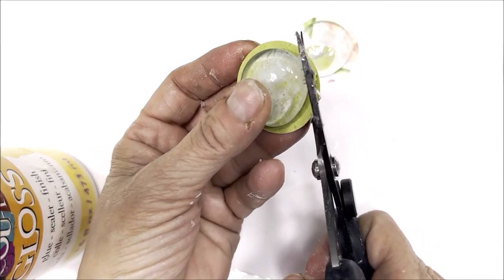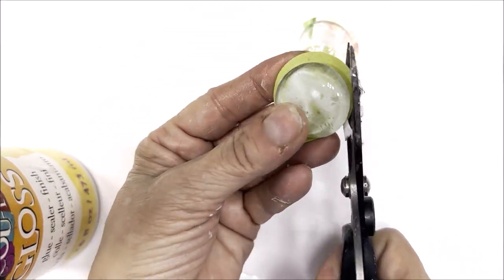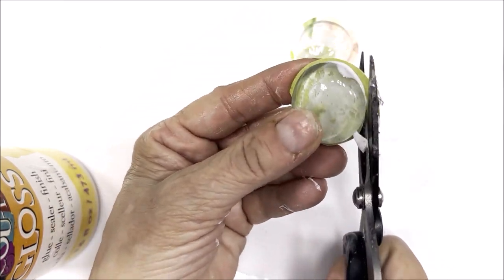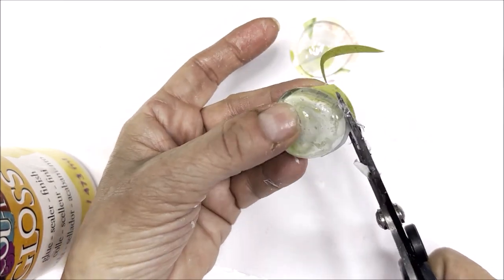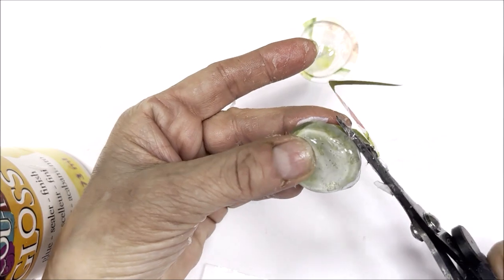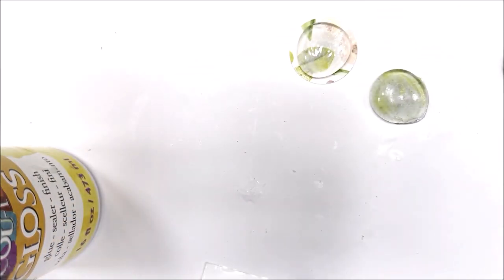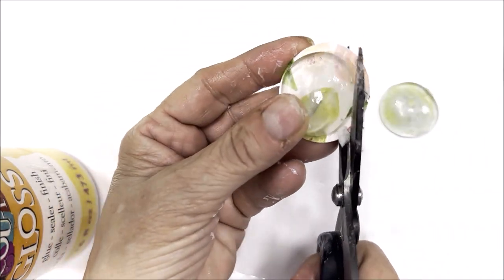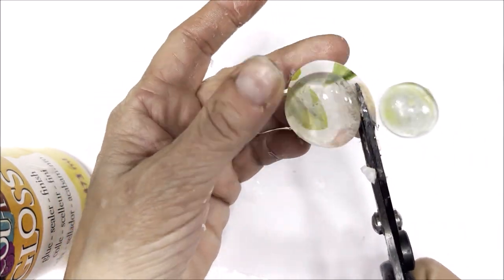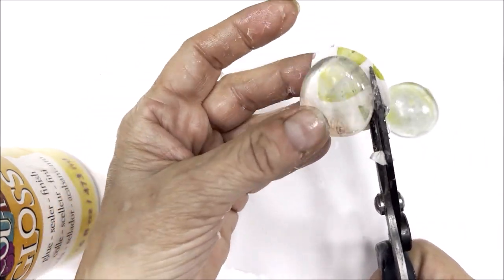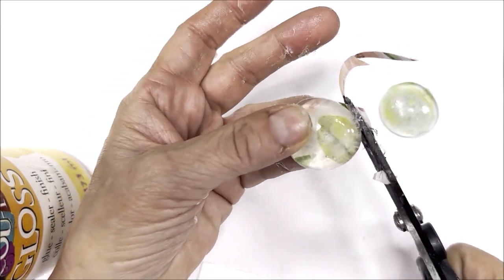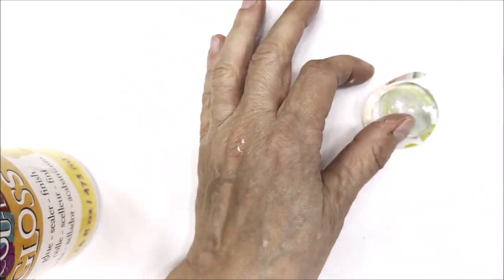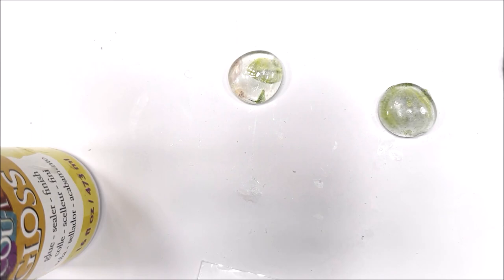We're going to trim the excess paper from behind these flat back marbles. They're just clear glass. You can also sand off the excess if you want it to be a little bit more distressed. Once these are dry, if you see a haze, simply wipe it down with a baby wipe or a clean washcloth.